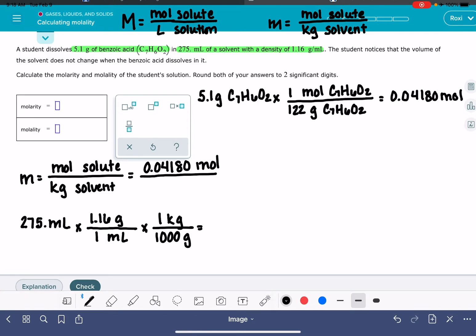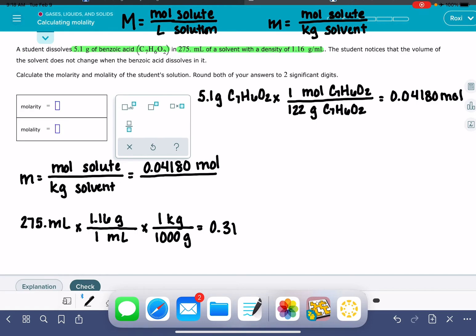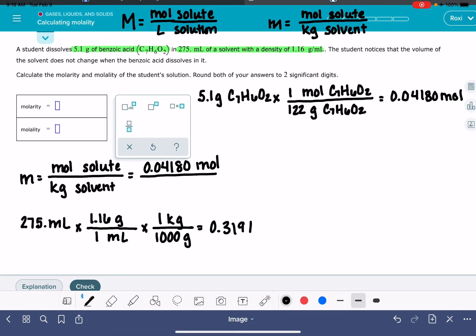275 times 1.16 divided by 1,000 is 0.319 kilograms. That's going to go right here, 0.319 kilograms. 0.0418 divided by 0.319 kilograms. The molality is 0.13 little m to two sig figs. And it doesn't look like it wants us to put the units in there, so I'll leave that off. So there's our molality.